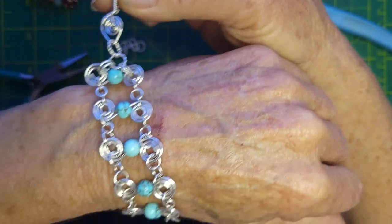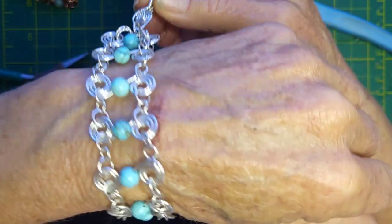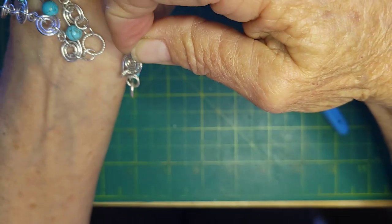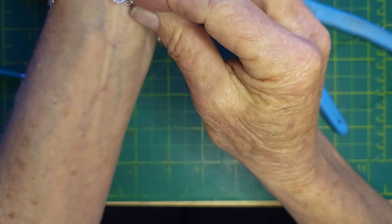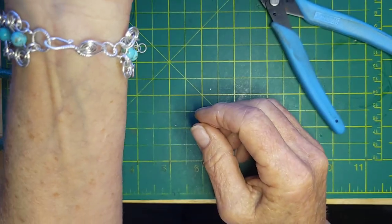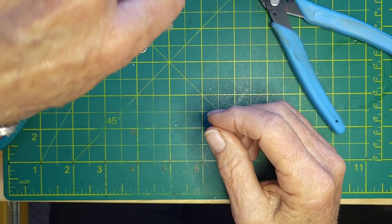So all I'm going to do is hold that clasp or that hook. And I'm going to turn my wrist and swing it around. And you can see where I made my clasp. And I'm just going to hook it in. And that's what you have. Isn't that adorable? Just adorable.